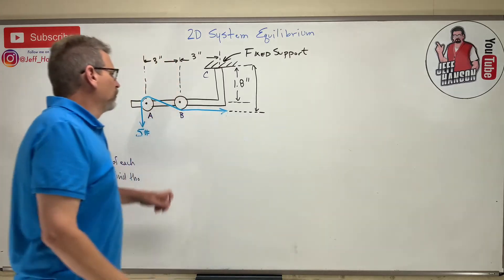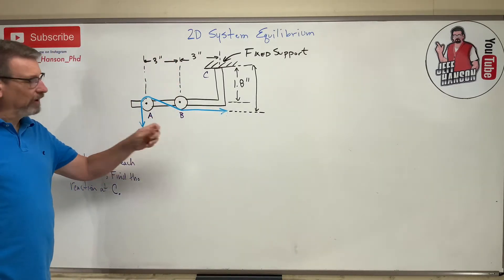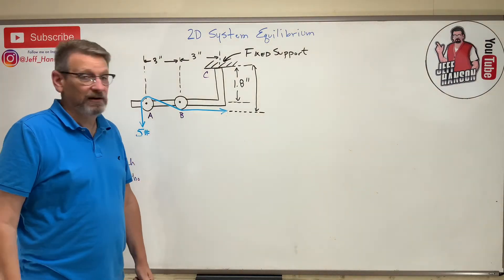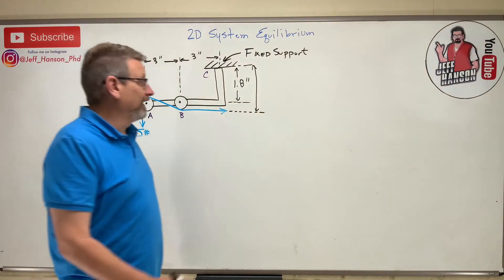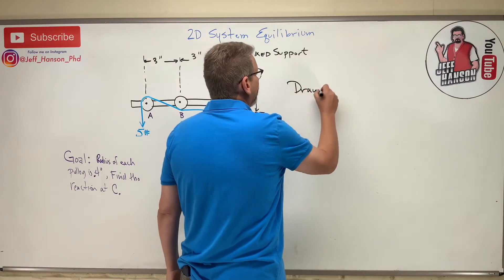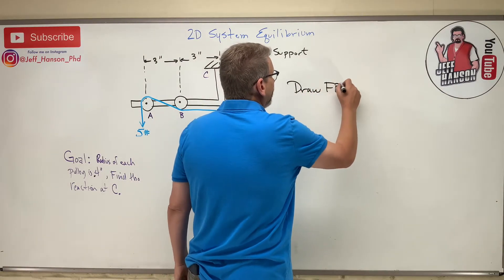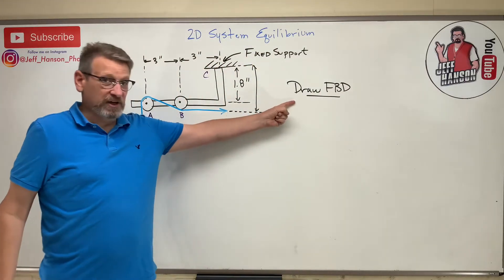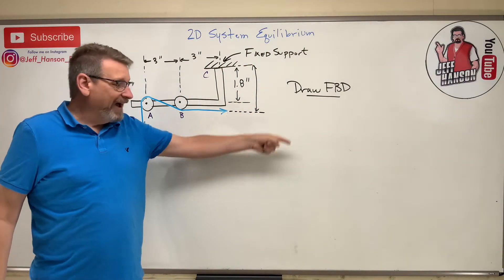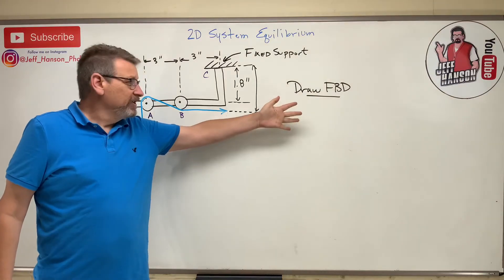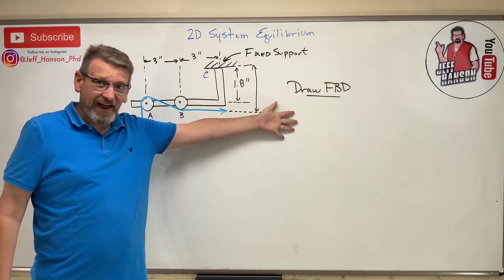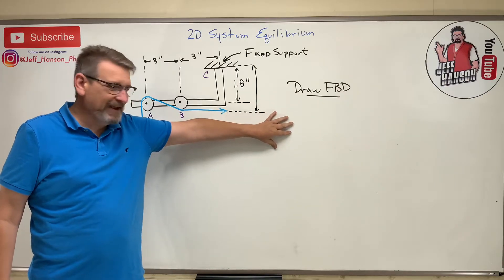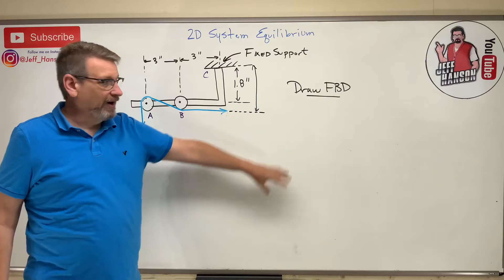To solve any one of these reaction force problems, step one needs to be automatic for you: draw a free body diagram. When I grade my students' papers I am looking for that. If you don't have that on there, the equations are based on that, so how are you going to write equations if you don't have that? This is so important and students are so lazy.